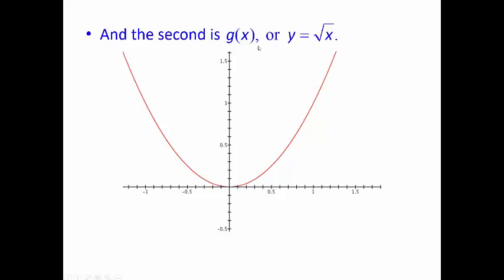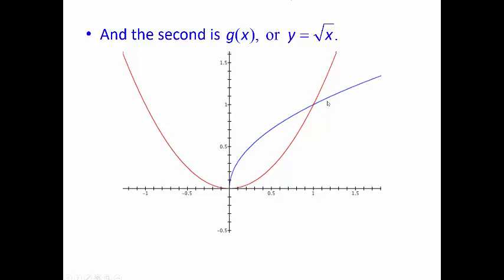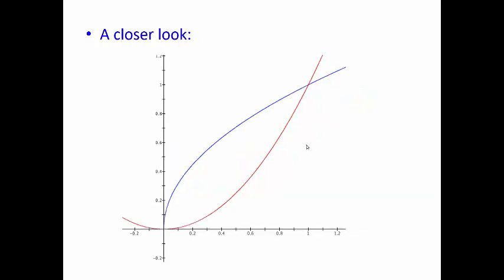The second curve will be g(x), or y equals the square root of x. The square root of x looks kind of like a wave — I like to think of it as a wave with a surfer on top. In blue, this blue curve right here is square root of x. So what we want to do now is find the area bounded by where these curves intersect. Let me zoom in for a closer look. The blue curve is the square root, and underneath is x squared.